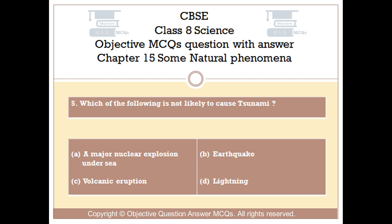Question number 5. Which of the following is not likely to cause a tsunami? Option A, A major nuclear explosion under sea. Option B, Earthquake. Option C, Volcanic eruption. Option D, Lightning.